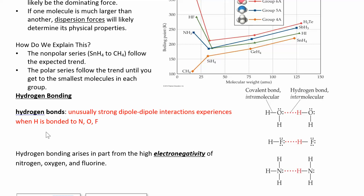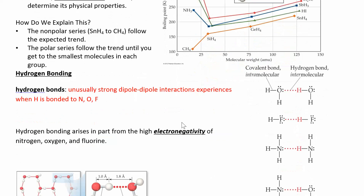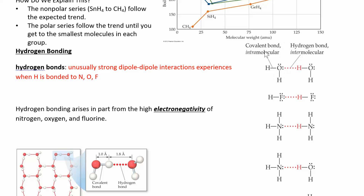A hydrogen bond is an unusually strong dipole-dipole interaction. It happens when a hydrogen is directly attached to an oxygen, nitrogen, or fluorine — creating a superpolar bond. In water, oxygen is more electronegative, so it's partially negative and the hydrogen is partially positive. The positive end of one molecule is attracted to the negative end of the other. The covalent O-H bond is the intramolecular force; the hydrogen bond — shown as a dotted line — is the intermolecular force holding one water molecule to another.